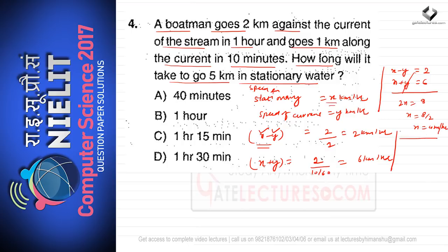The distance is five kilometers and the speed in stationary water is four km/h. Time equals distance over speed: 5/4 hours, which is one hour 15 minutes. So option C is the correct option.